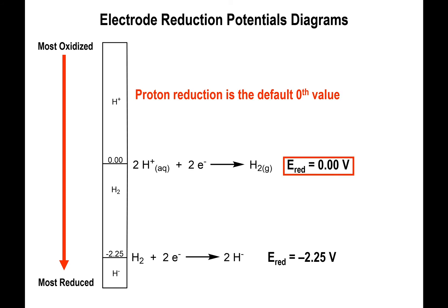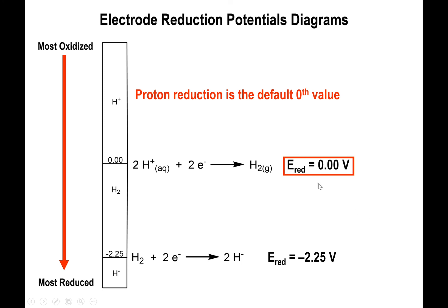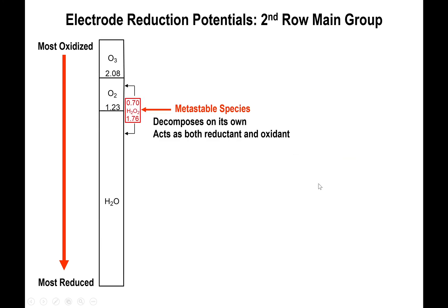Each one of these half-reduction reactions has its corresponding reduction potential value: for H+ to H2 that's zero volts, and for H2 to hydride (H−) that's negative 2.25 volts. The hydrogen value is actually the reference value for most everything else we do. The metastable species shown in red boxes react with each other via a disproportionation reaction, yielding the product on the top of the main diagram and the product on the bottom — so from H2O2 you make O2, and from H2O2 you also make water.